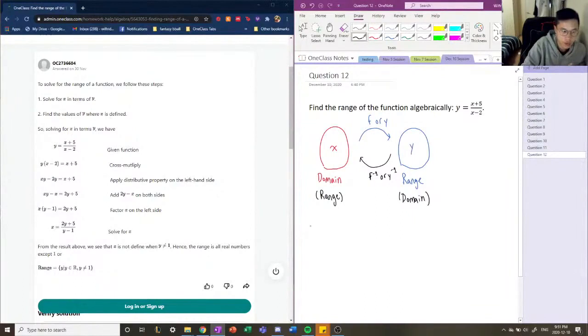So we have our function here, x plus 5 divided by x minus 2. Okay, so we're going to isolate for x. So if we're going to isolate for x, then we're going to, first of all, cross multiply. So we're going to multiply both sides by x minus 2. So we get x minus 2 times y equals x plus 5.